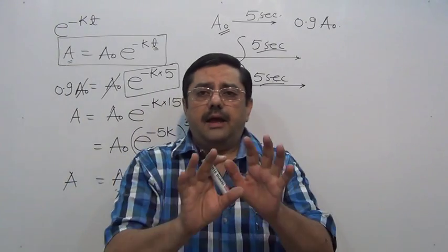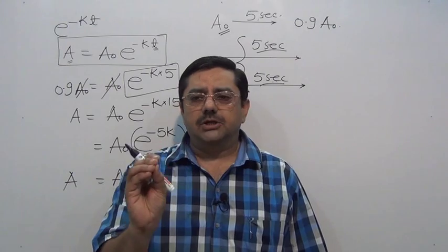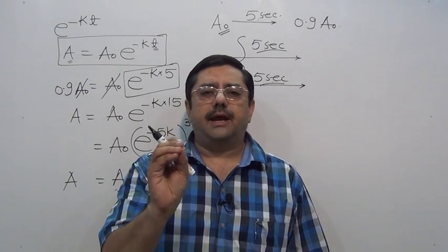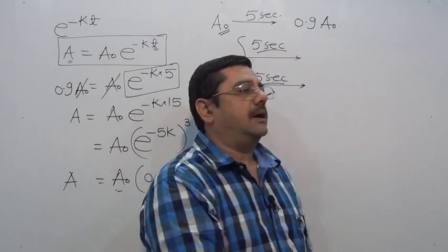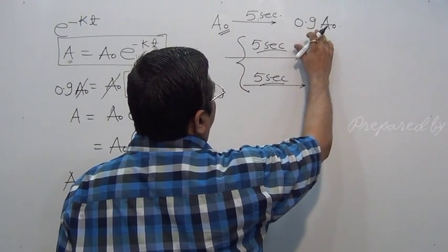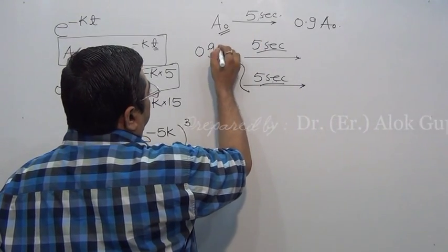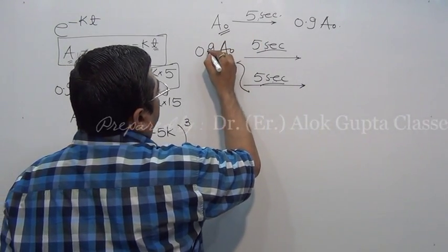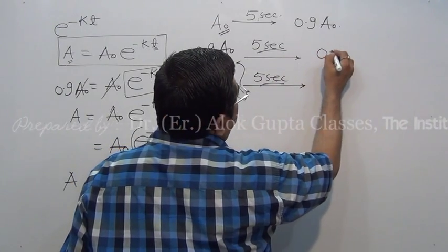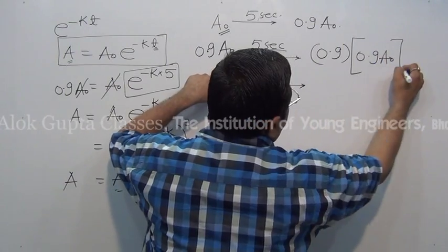When you simplify, you will get the answer. You don't need equations - these four types of questions have a mechanism to solve them. Let me show you how. Initially A₀, after 5 seconds 0.9A₀. Now initially 0.9A₀, after another 5 seconds it is 0.9 of 0.9A₀.